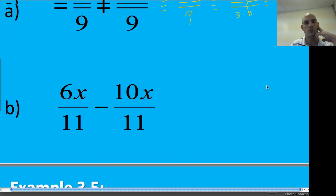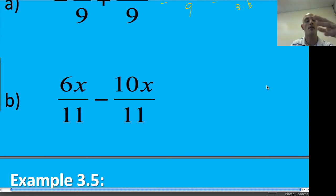See if you can do B on your own. B is on your own. And remember, we're going to have 11ths. What's going to be on the top? Then ask yourself, can I reduce this?